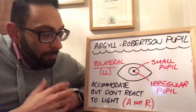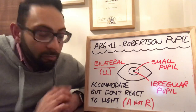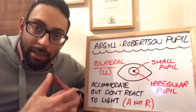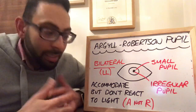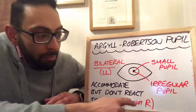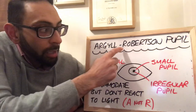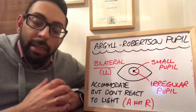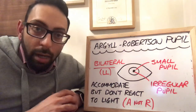The other classic thing to remember: the pupil accommodates, but it doesn't react to light. How do I remember this? It's A but not R — it accommodates, but it doesn't react to light.